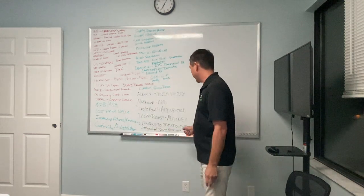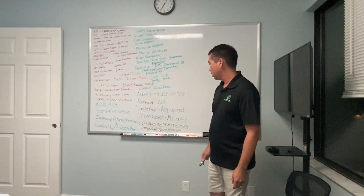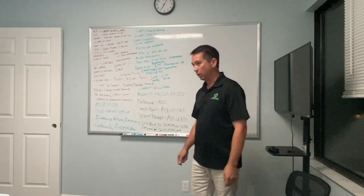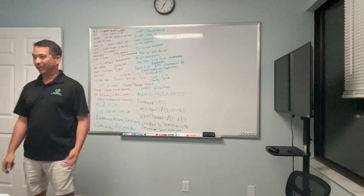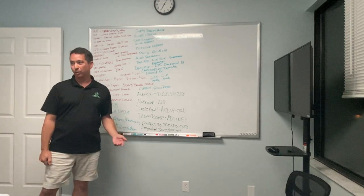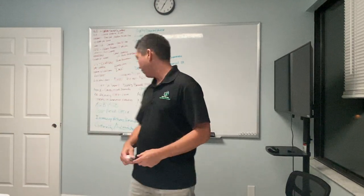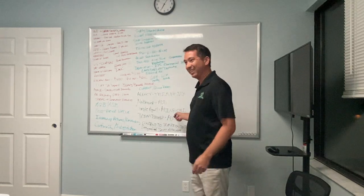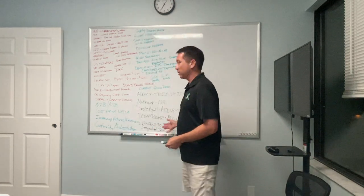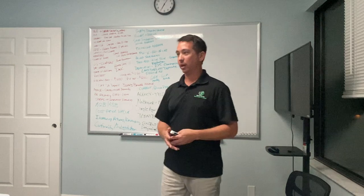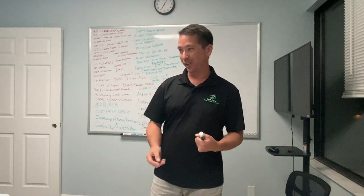Brokerage relationships and disclosures are heavily tested — especially consent to transition. The duties are sometimes tested as a negative question: 'which of the following is NOT a duty of a single agent?' And they'll have limited confidentiality as the answer. Look for two answers that contradict each other — usually one of those is the right answer, and if they're exact opposites, chances are one of them is correct.